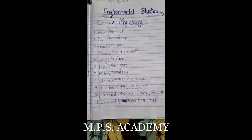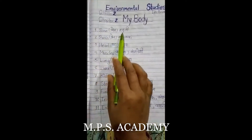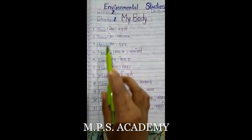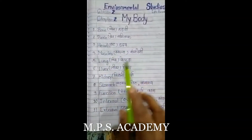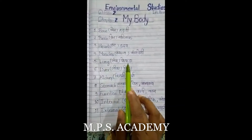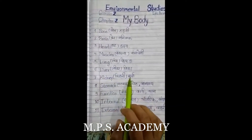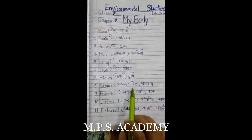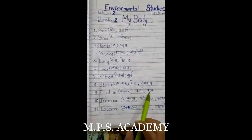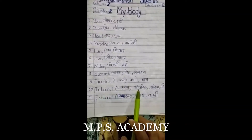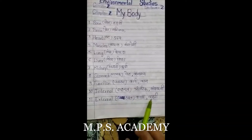Before going to the theory section, let's have a look at some word meanings. Bone — haddi, brain — dimaag, heart — dil, muscles — manspeshiya, lung — phephda, liver — jigar, kidney — gurda, stomach — pet, function — kaam, internal — andaruni, external — bahari.